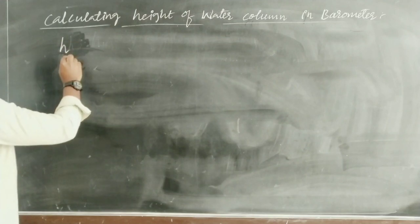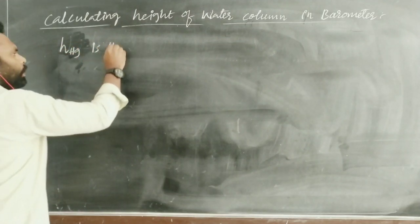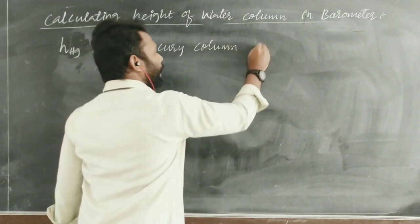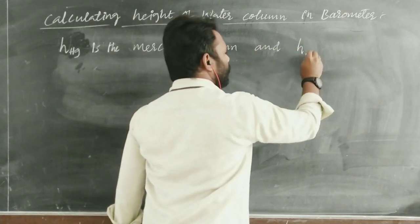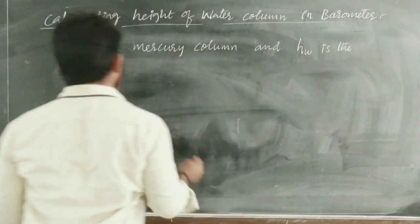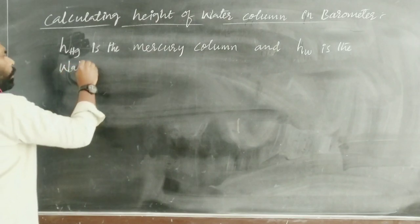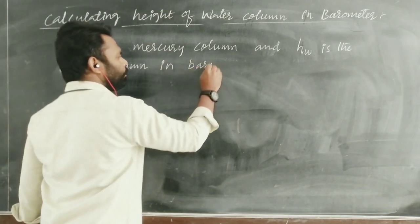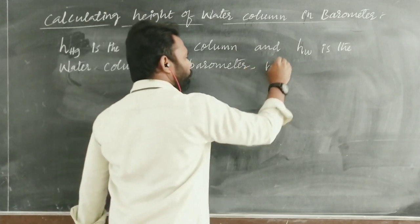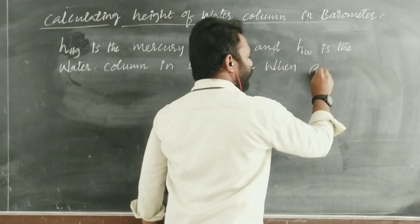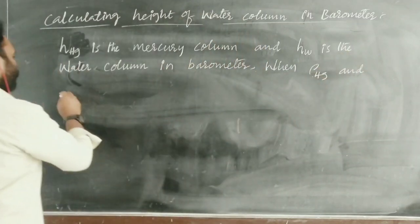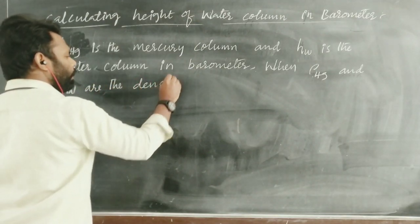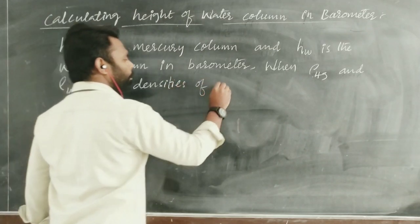Suppose H_Hg is the mercury column height, and H_w is the water column height in the barometer. And rho_Hg and rho_w are the densities of mercury and water, respectively.